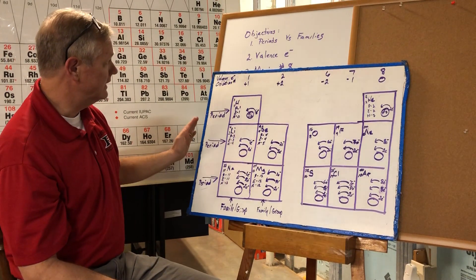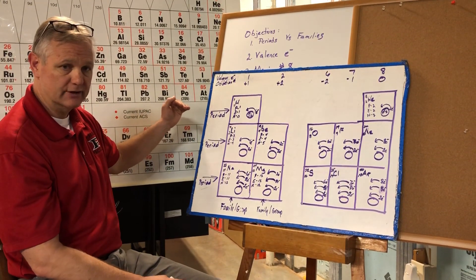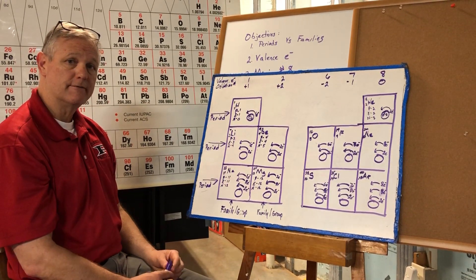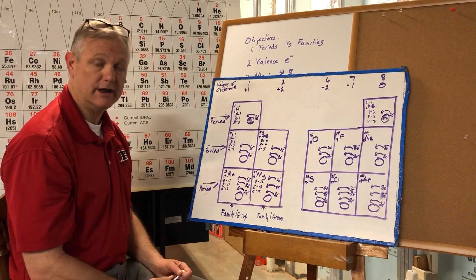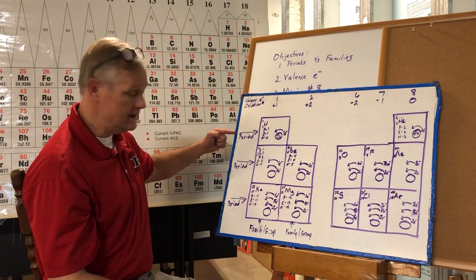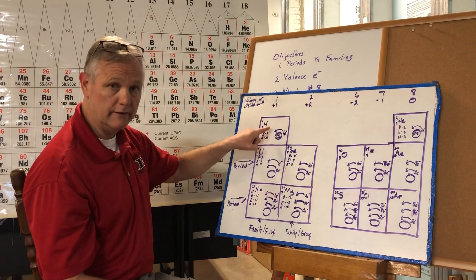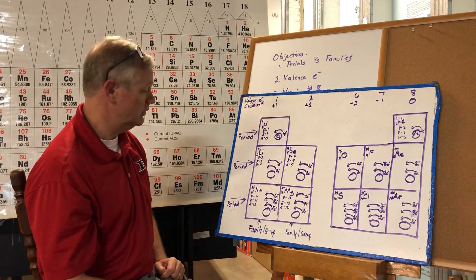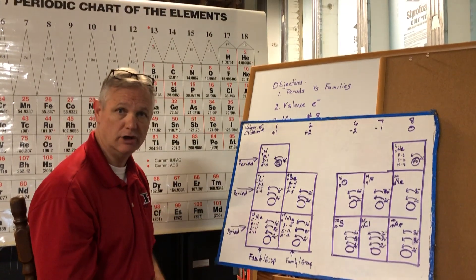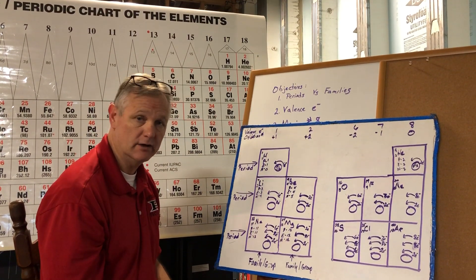So let's go through and let's talk a little bit about valence electrons. Valence electrons are going to be the electrons that are found in the outermost energy level. So if I look at period one, I notice that there is one energy level. If I look at period two, there's two energy levels, three, three energy levels, four, five, and six, and so on.